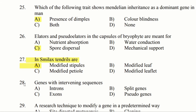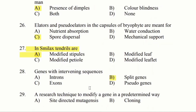Question 28: Gene with the intervening sequence. Option A: intron. Option B: split gene. Option C: exon. Option D: pseudo-gene. The answer is option B, split gene.